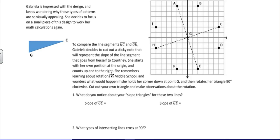She remembers learning about rotations in middle school and wonders what would happen if she holds her corner down at point G, then rotates her triangle 90 degrees clockwise. Cut out your own triangle and make observations about the rotation. She's going to hold point G down and rotate 90 degrees. So after I have rotated the triangle, I can see that this segment lies directly on segment GE. It coincides.